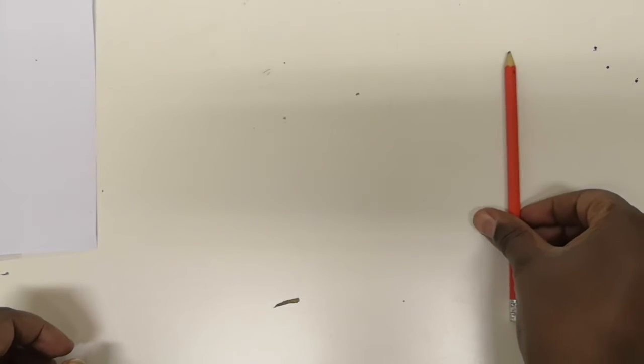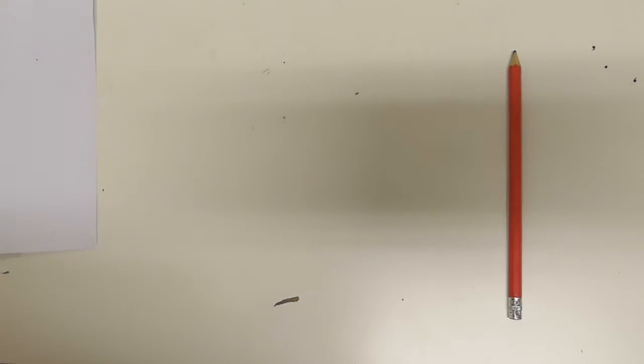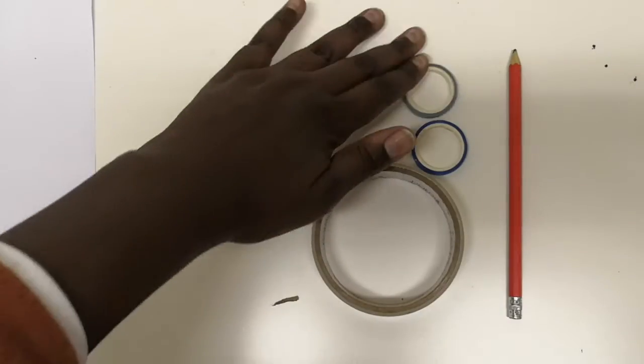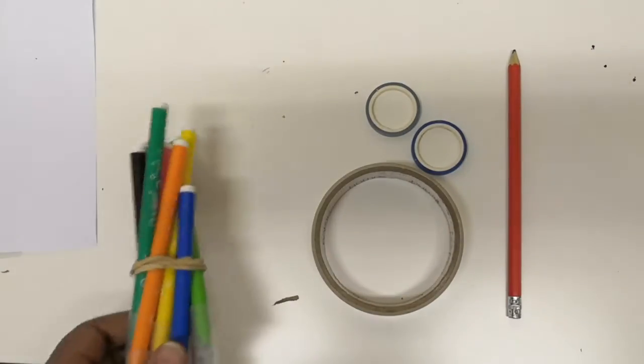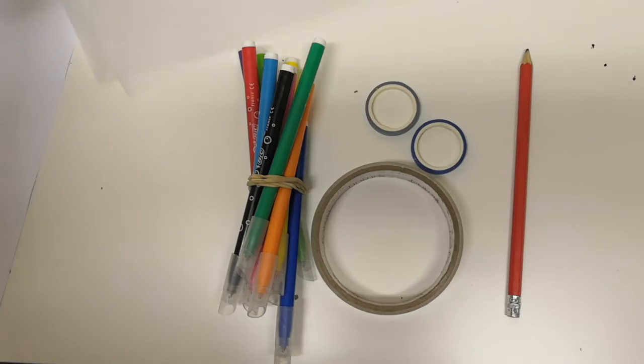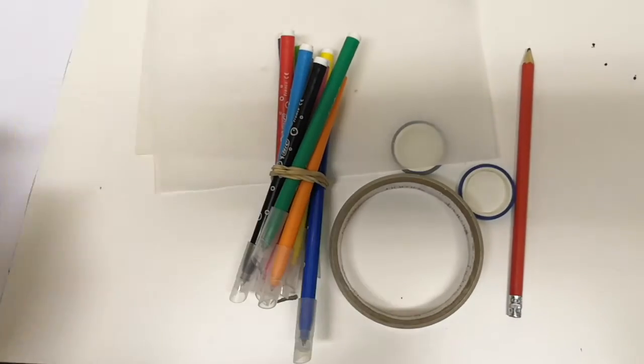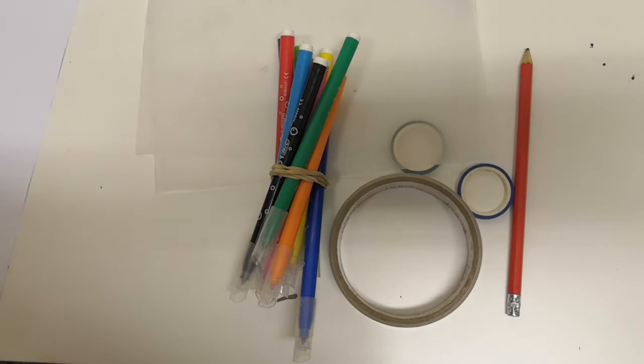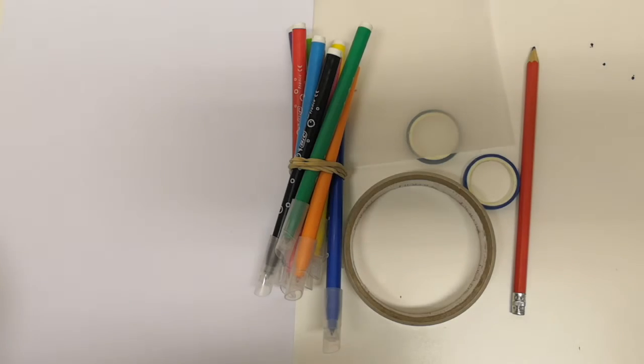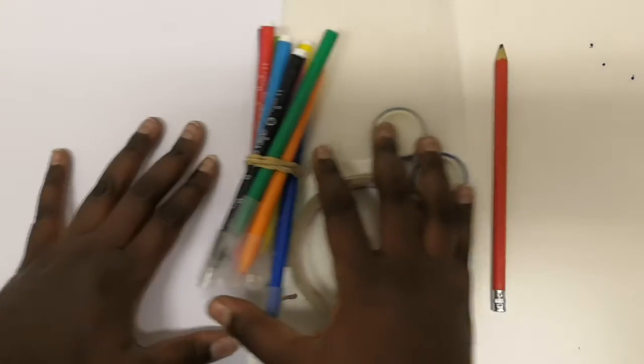So just to let you know, you need an image, a pencil, some type of compass or circular object that you can draw around - I have these instead of a compass. Possibly optional is coloring pencils or felt tips, and what's really important is you need some tracing paper.